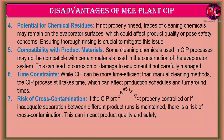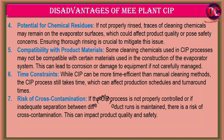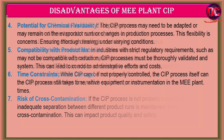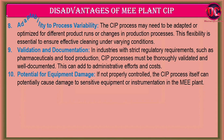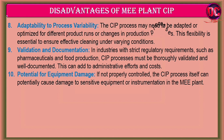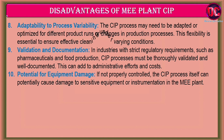7. Risk of Cross Contamination: If the CIP process is not properly controlled or if inadequate separation between different product runs is maintained, there is a risk of cross-contamination. This can impact product quality and safety. 8. Adaptability to Process Variability: The CIP process may need to be adapted or optimized for different product runs or changes in production processes. This flexibility is essential to ensure effective cleaning under varying conditions.